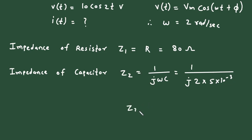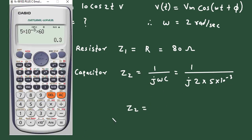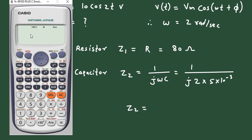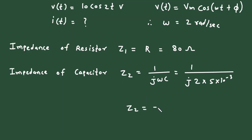Solving in the calculator in complex mode: 1/(j × 2 × 5 × 10⁻³) gives Z2 equal to −j100. Since it is impedance, its unit will be Ohm.